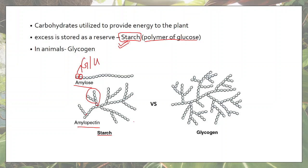In animals, the reserve form of carbohydrates is glycogen, which is also a polymer of glucose. It resembles amylopectin, however it is much more branched in comparison. So remember: starch and glycogen are the storage forms of carbohydrates in plants and animals respectively.